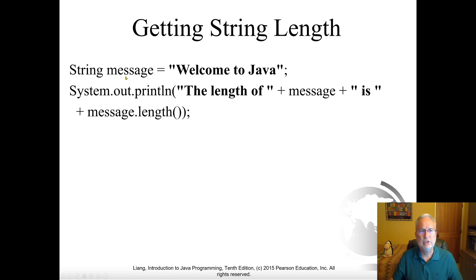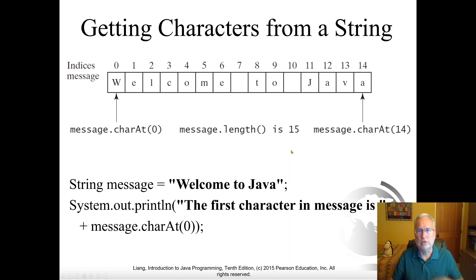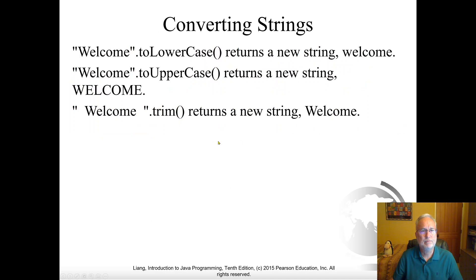Here's how you use length: if message is a String, then message.length() — note the parentheses, meaning it's a method — returns the length. Getting characters from a string is really important. message.charAt(0) gives you the first character 'W'. If the message length is 15, then message.charAt(14) — length minus one — gives you the last character. That comes in handy especially when you want to loop through a string looking for something, like in a hangman game.